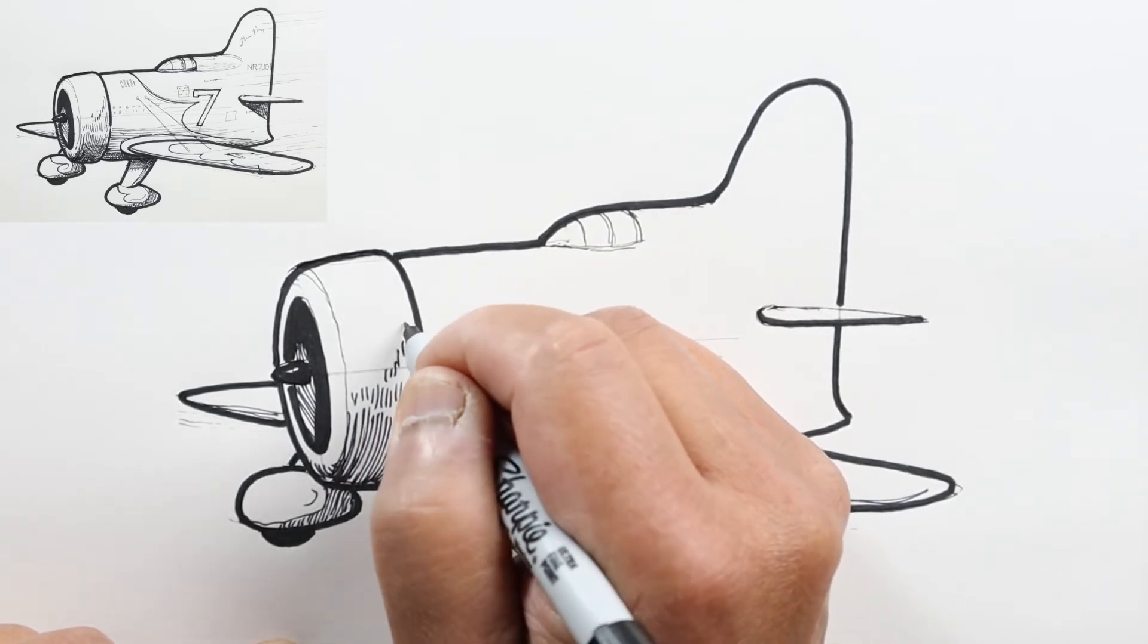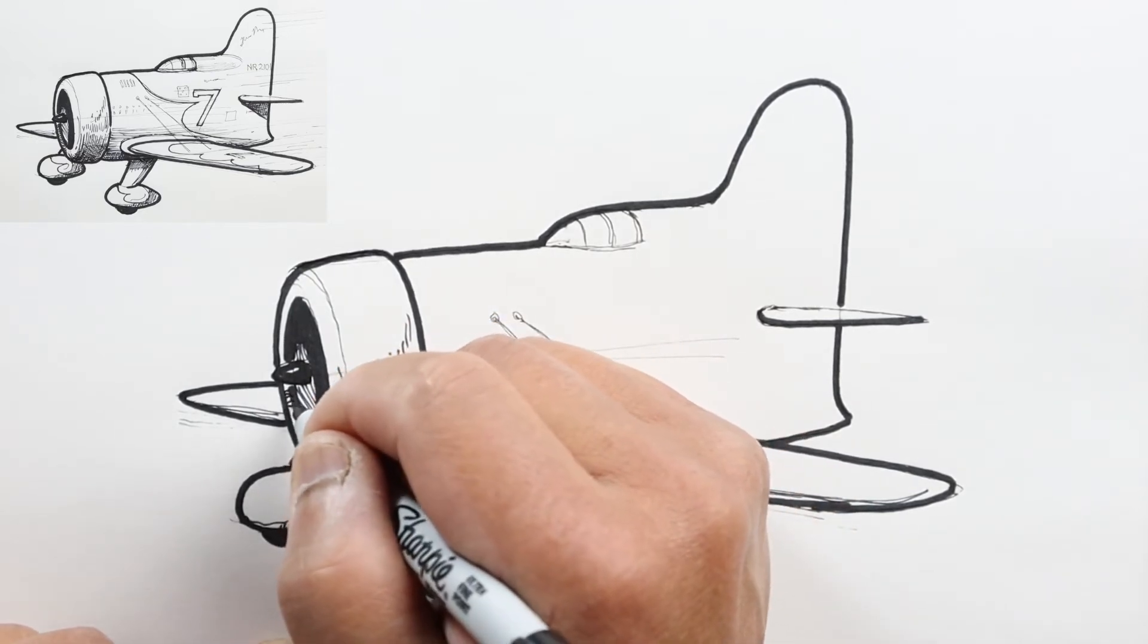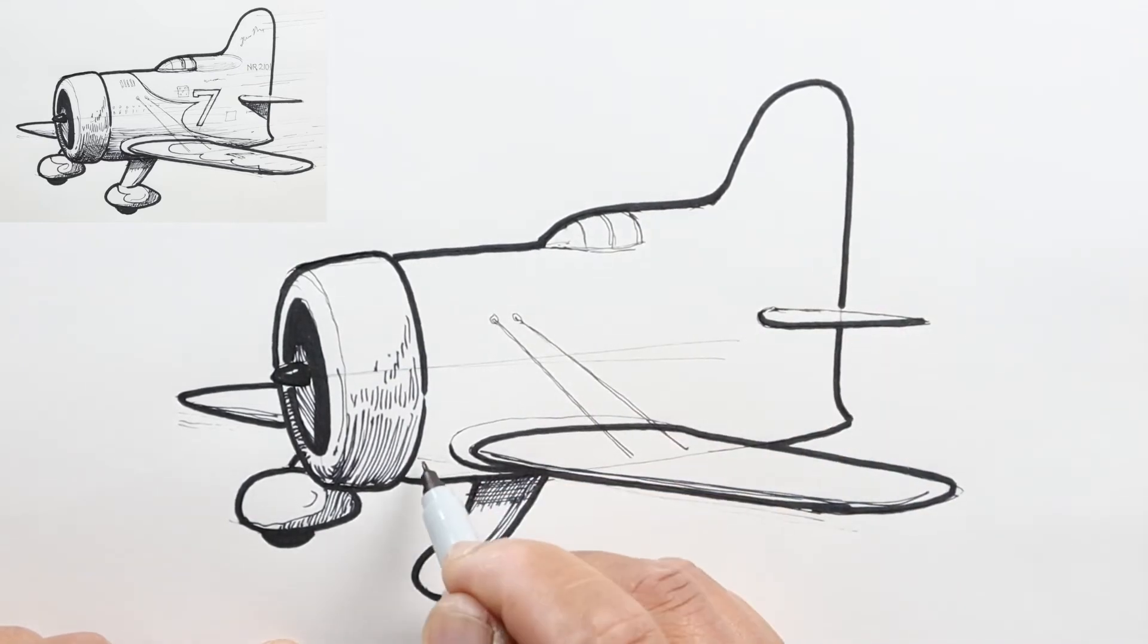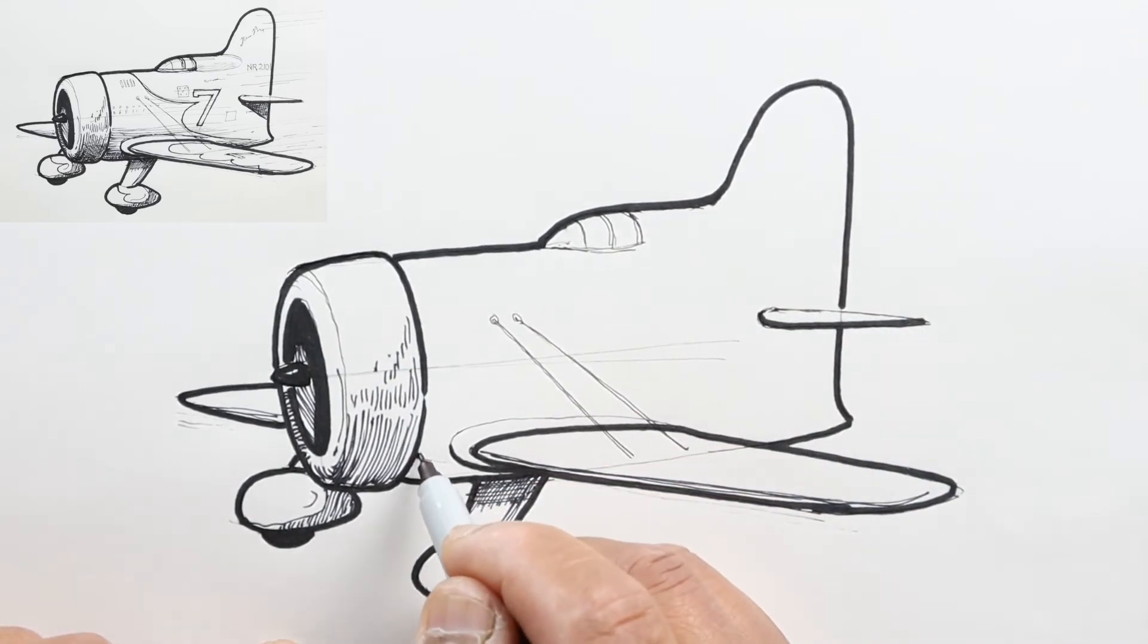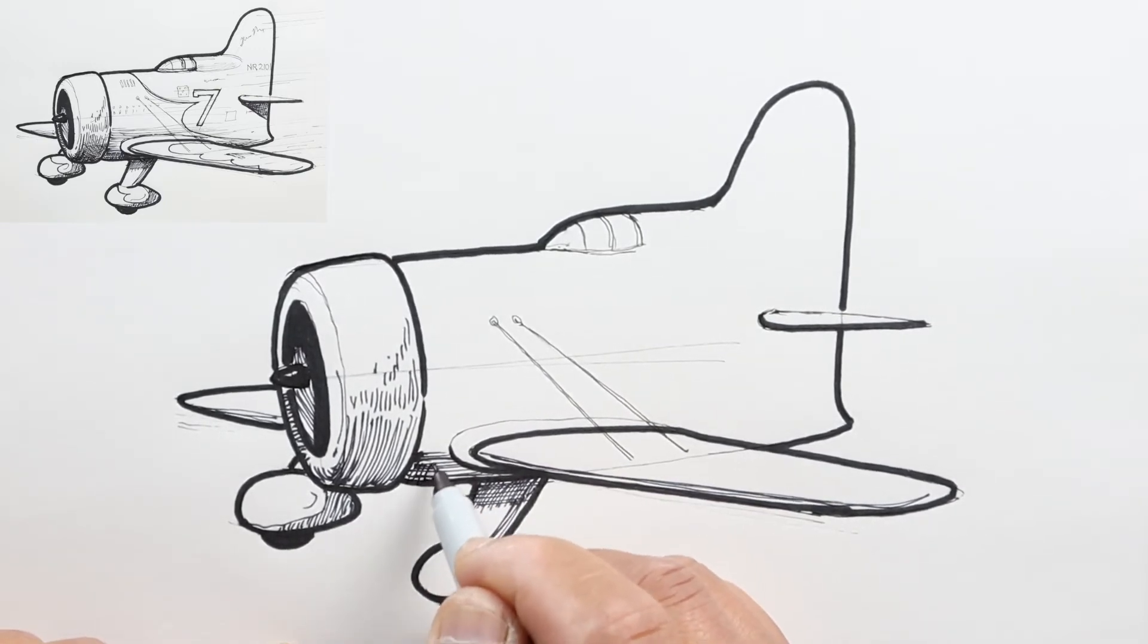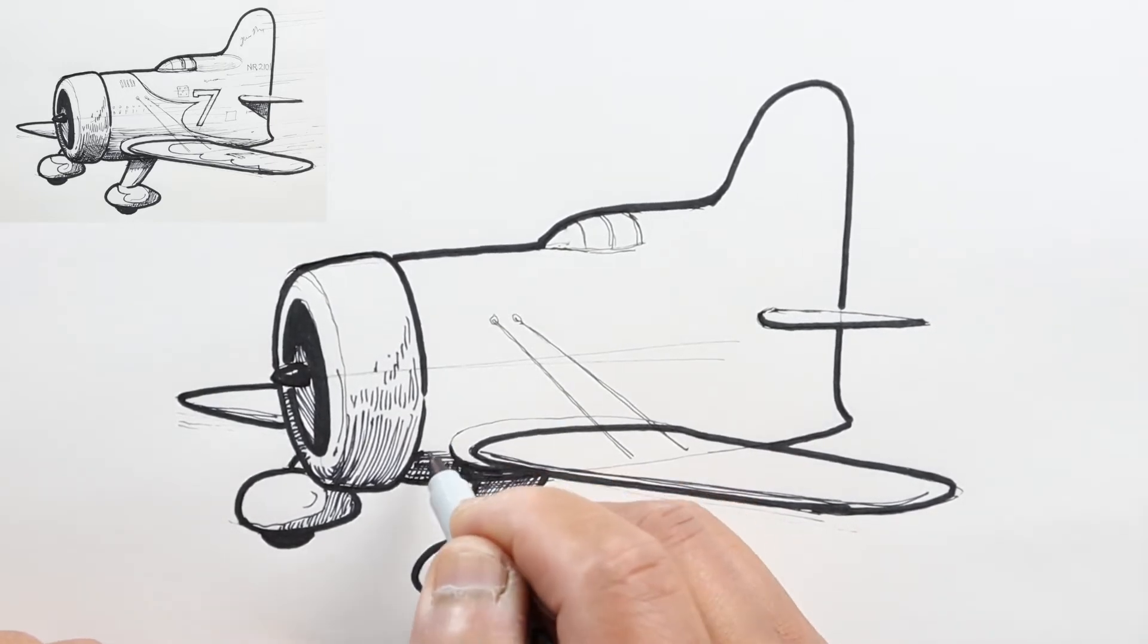And some interrupted lines as I get into the lighter areas. Same here—add some shadow, form shadow, and the cast shadow would be down here.